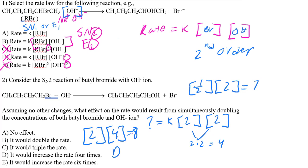For an SN1 reaction, if you increase bromide by a factor of 10, your rate increases by 10 because it's unimolecular. In this case we're dealing with a bimolecular reaction, so it depends on both bromide and hydroxide. Because we increased both by 2, it's 2 times 2 equals 4, so the rate increases by 4 times.